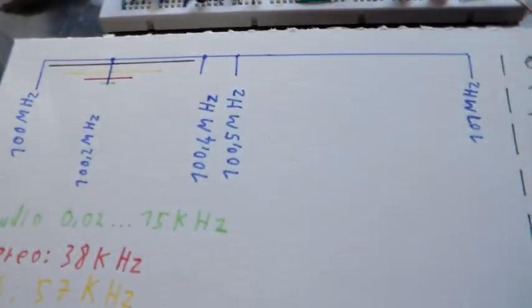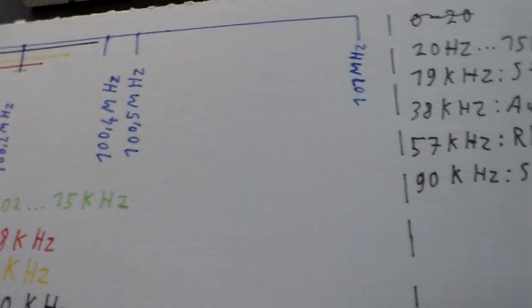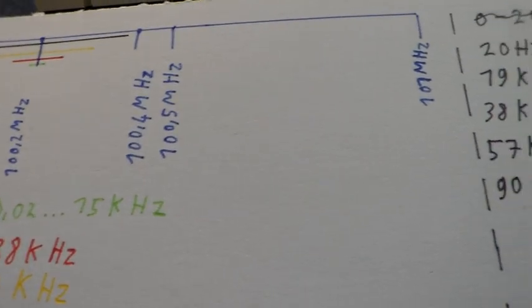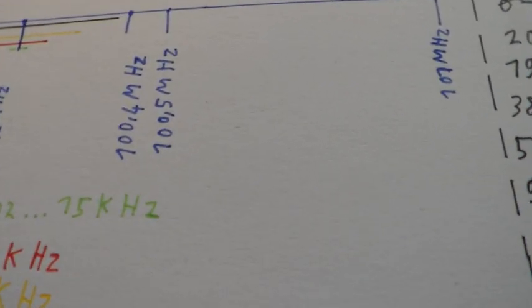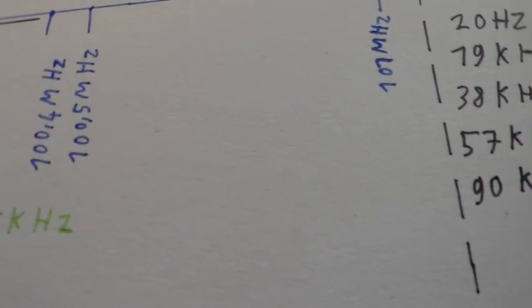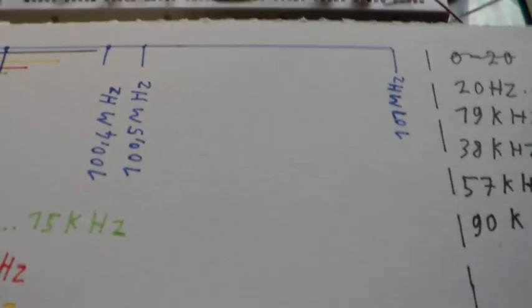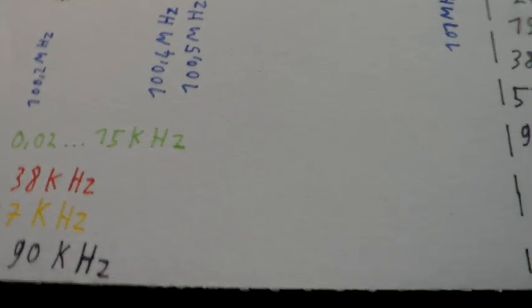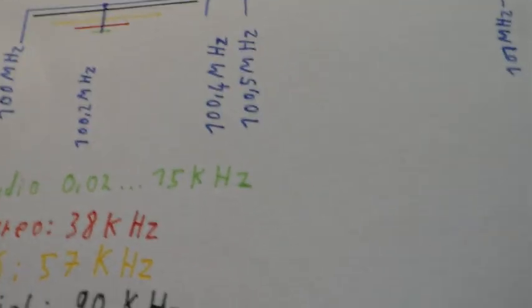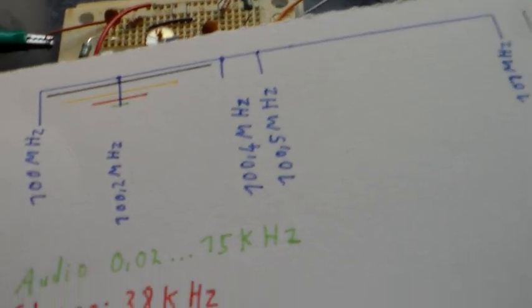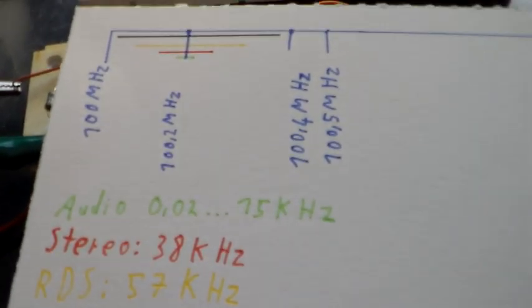In this video I want to show you stuff about FM stations. This is like the 10th take because my camera was trolling me. One camera makes a 280 megabyte file, this one makes 600+ megabytes. The other alternative would be the red camera with noise in the audio. So this is take number 10.